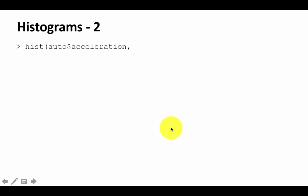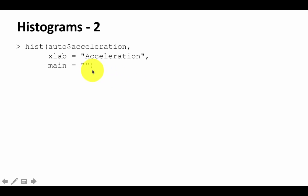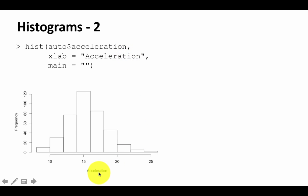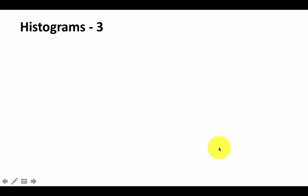You can control features of the histogram. For example, you can specify xlab='acceleration' to set the x-axis label, and main='' to give the chart no title. If you do that, you'll get 'acceleration' on the x-axis label, with frequency on the y-axis and no chart title.